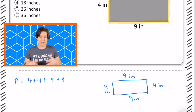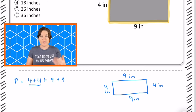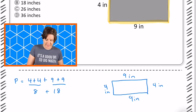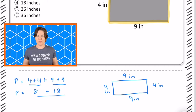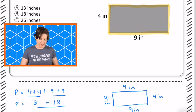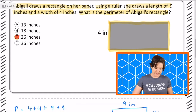It doesn't matter the order of our addends, as long as we're adding them all up. So 4 plus 4 equals 8, and 9 plus 9 equals 18. And 8 plus 18 equals 26. So the perimeter equals 26 inches, and that would be answer choice C — 26 inches.